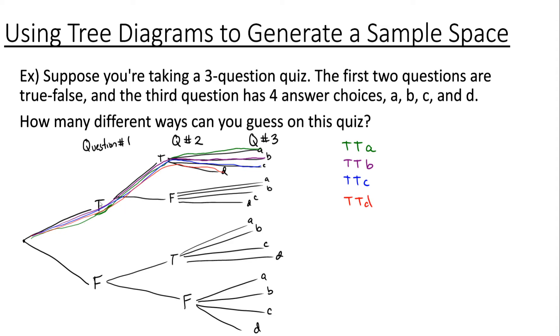We would follow through on every other branch on the tree like this and that will generate the whole sample space for us. If we follow the other ones we'll end up getting true false A, true false B, true false C, true false D.